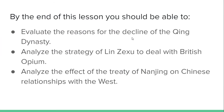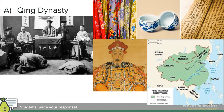We're going to look at the reasons why the Qing Dynasty declines — spoiler alert. We're going to analyze the strategy of Lin Zexu to deal with British opium, and look at the effects of the Treaty of Nanjing on the Chinese relationship with the West. So, let's begin our story.